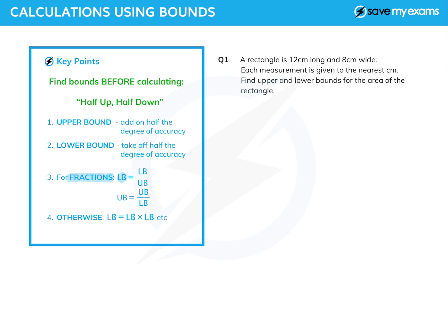If you're calculating a fraction and you want to find its lower bound, you do the lower bound over the upper bound, and vice versa. So if you want to find the upper bound of a fraction, you take the upper bound of the top and the lower bound of the bottom.